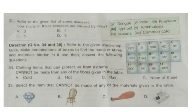Question 34 and 35. Refer to the given word chop table. Make a combination of boxes to find the names of fibers and materials hidden in it, and then answer the following questions. Question 34: clothing items that can protect us from extreme dash cannot be made from any of the fibers given in the table. Now look at the table — there are fibers like cotton and silk, but wool is not present. So the answer will be option A: cold.